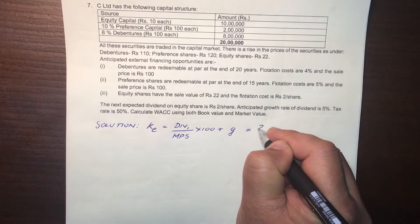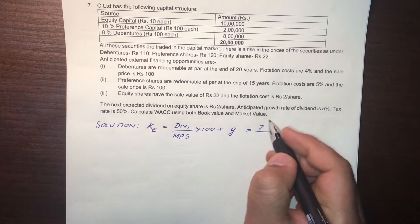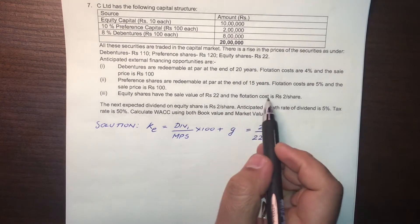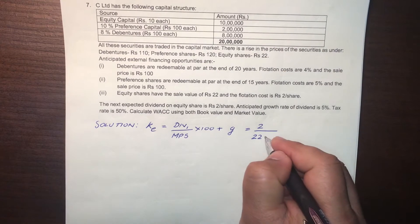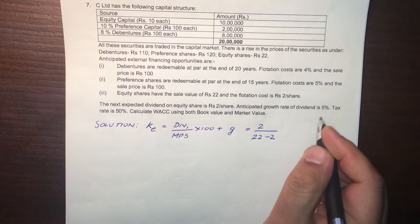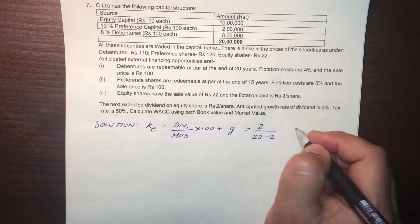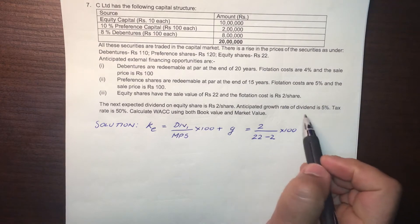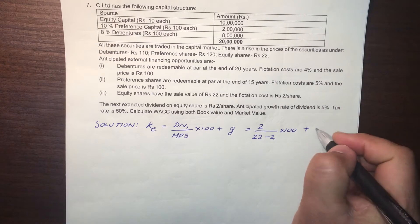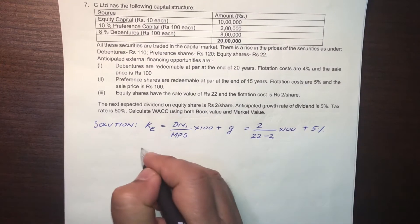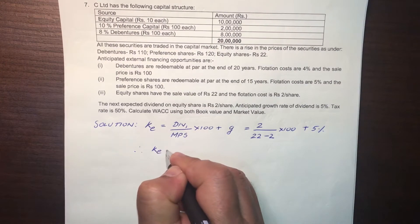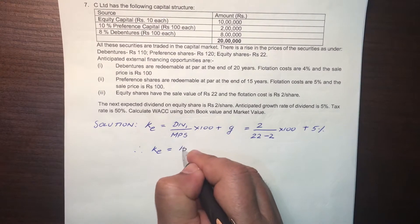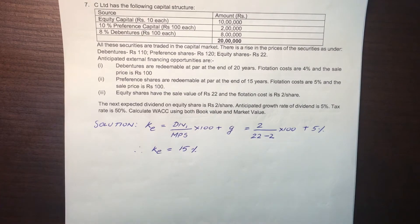The dividend (DIV) is 2 rupees. The market price per share is 22 rupees; however, flotation cost is 2 rupees, so we deduct that from the market price. The growth rate is 5%. Therefore, KE = 2 / (22 − 2) × 100 + 5 = 15%. We have found out KE.